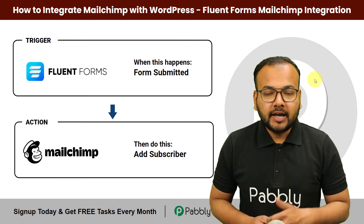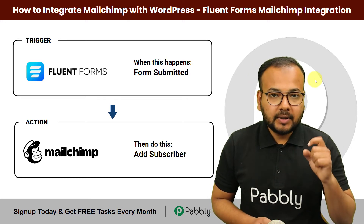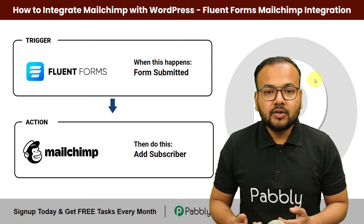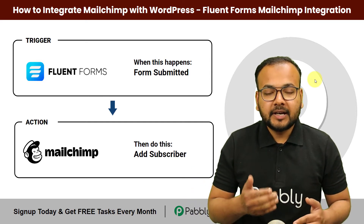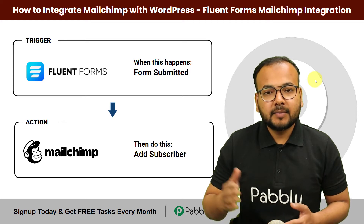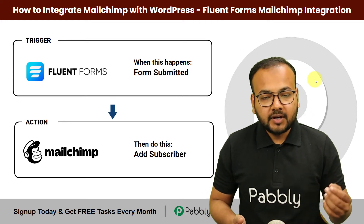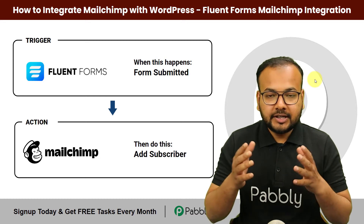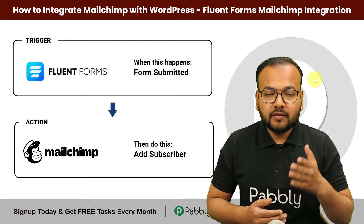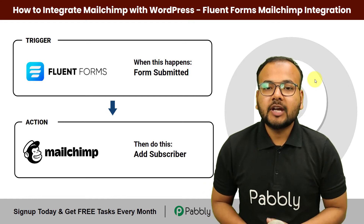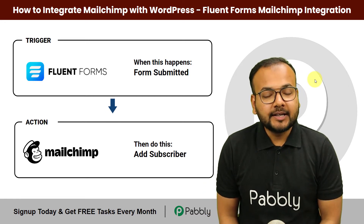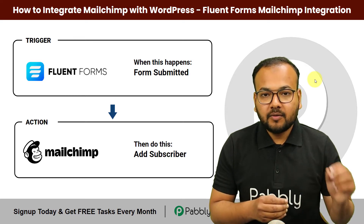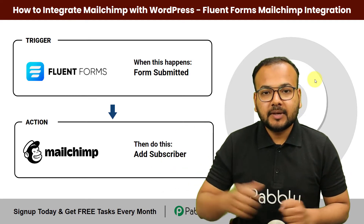In this video I am going to show you an integration between a WordPress plugin called Fluent Forms and how you can easily set up an integration between this plugin and MailChimp, so that whenever you get a form submission in Fluent Forms the email address of the person who filled the form will be added as a contact in MailChimp automatically — without having to manually copy and paste the data.